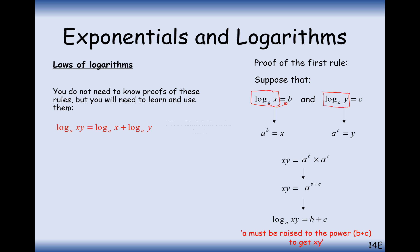A very similar thing works if you put a division symbol and a negative in the indices. So log base A of X divided by Y is equal to log base A of X minus log base A of Y. This is the division law, and the previous one is the multiplication law.